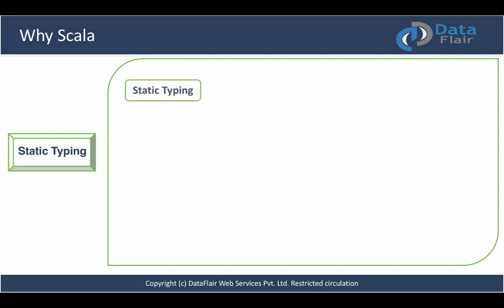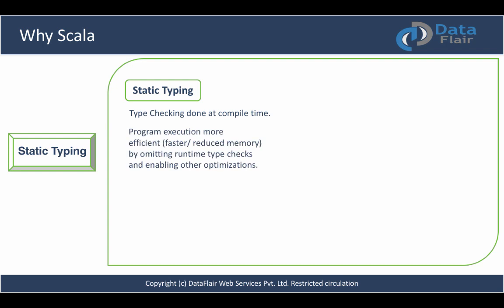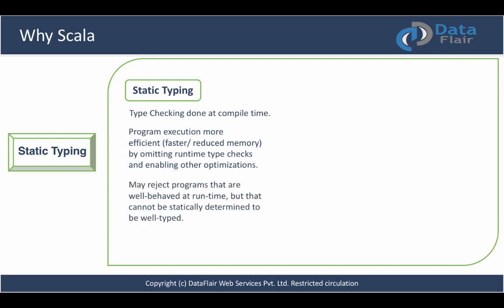Scala is statically typed. It may be a bit advanced for beginners but it's helpful to understand the difference between dynamic and statically typed languages. Scala's static typing system is very versatile — a lot of information about a program's behavior can be encoded in types, allowing the compiler to guarantee a certain level of correctness. This is particularly useful for code parts that are rarely used. In statically typed languages, type checking is done at compile time, and program execution can be made more efficient by omitting runtime type checks and enabling other optimizations. Any error that can be caught by the compiler will be caught at compile time before the program has even started running.